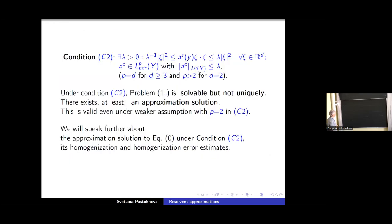And now we consider condition C2. The same demand for the symmetric part, uniform ellipticity, and skew symmetric part has entries from the big space L^p of cell of periodicity Y, where p equal to the dimension d if d greater than two. In two dimension under condition C2 problem one ε is solvable, not uniquely. There exist at least an approximation solution to this problem. And I will a little bit later explain what it means an approximation solution.